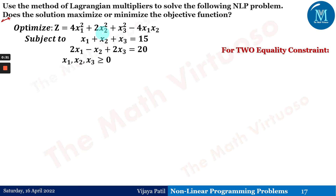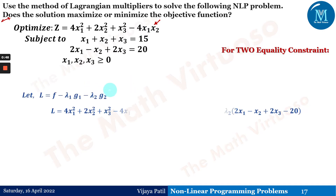The question is to optimize z = 4x1² + 2x2² + x3² − 4x1x2. I have tried to include the combination of this cross term, which was not taken in the last question, and I will explain how things change with this term while taking the matrix. Now, if we have two constraints, we introduce two Lagrangian multipliers: λ1 and λ2. So L is formed accordingly.